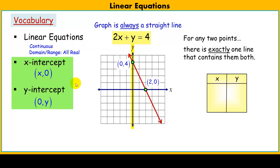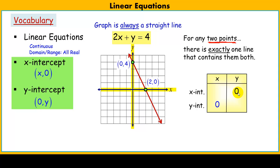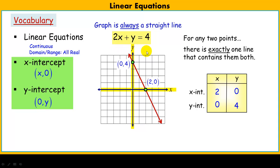Since we know two points define the line, using the intercepts makes graphing very easy. We set up a simple t-table with just two points: the x-intercept and the y-intercept. It's very simple to find those points — just substitute y equals 0 to get the x-intercept, and x equals 0 to get the y-intercept, then solve. For example, if y equals 0, we get 2x equals 4, giving x equals 2. We'll also use a method called the cover-up method in our next examples.